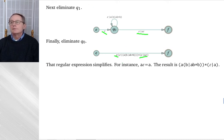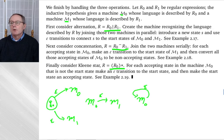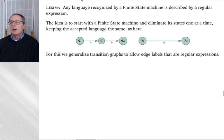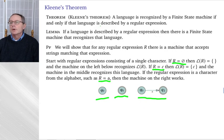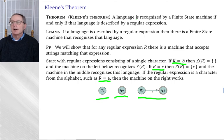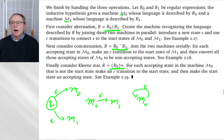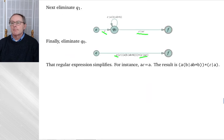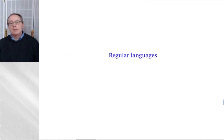So we have both halves of the argument: if you give me a finite state machine, I can give you a regular expression; and if you give me a regular expression, I can give you a finite state machine. We're done. This is Kleene's theorem: a language is recognized by a finite state machine if and only if it is described by a regular expression. Next we'll discuss so-called regular languages.